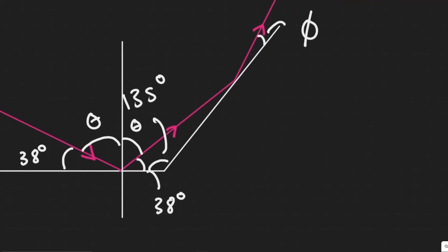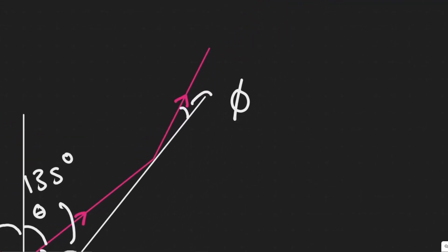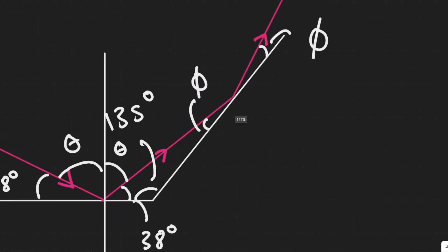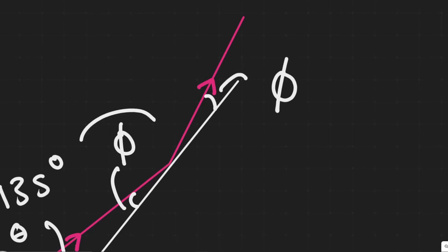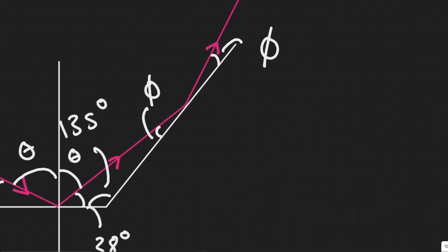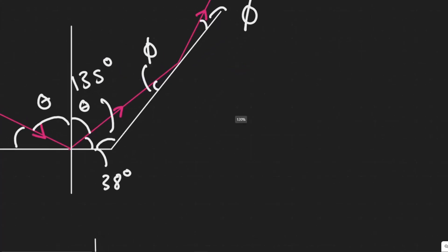Now that we know this angle is 38 degrees, it makes solving this problem a lot easier. The angle phi on the second mirror's outgoing side is the same as the angle on the incoming side, based on the law of reflection — just like the 38-degree pair were the same. So if I can figure out what this interior angle is, I'll be able to solve the problem, since phi here and phi there are the same.